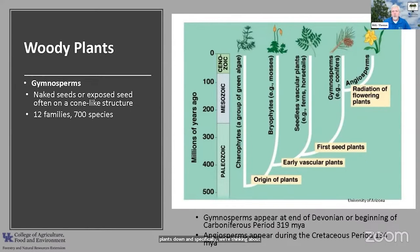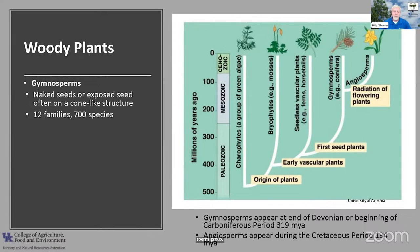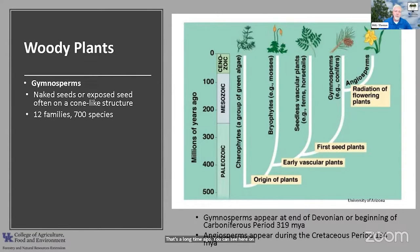The first group are gymnosperms, which have naked or exposed seeds, like you would find in pine cones. There are only 12 families with roughly 700 species in the world. These really started developing more than 319 million years ago. Looking at this chart, we can see how plants kept moving up — from algae to mosses, then ferns, until we finally get to flowering plants and angiosperms.